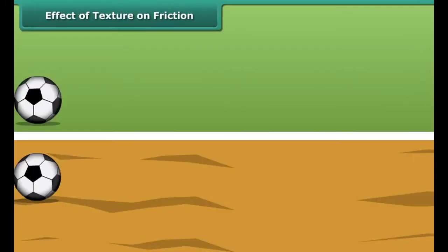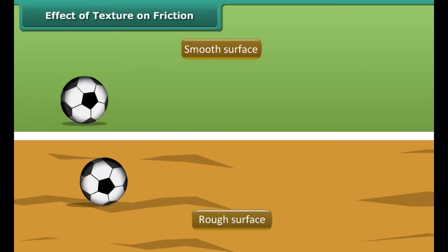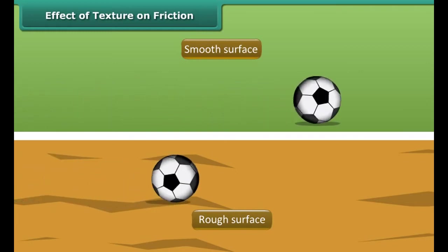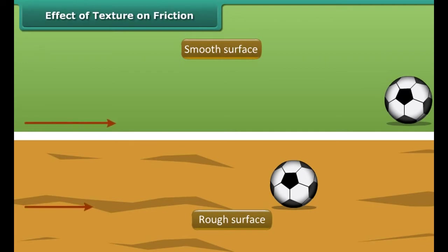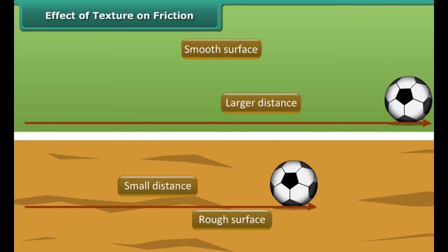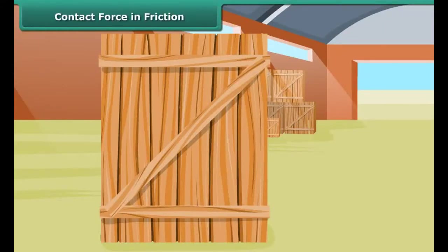While in motion, the tires of the bicycle are rubbing against the surface of the road. When two surfaces rub against one another, a force comes into play. This force acts in the direction opposite to the direction of motion, thus slowing down the motion and finally bringing the moving object to a stop.